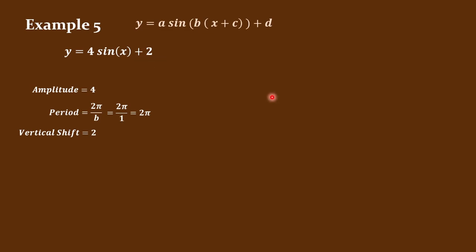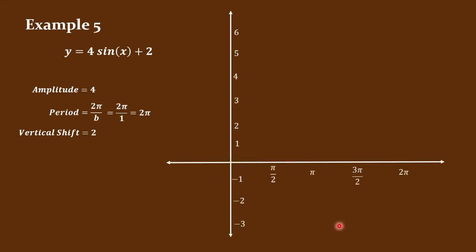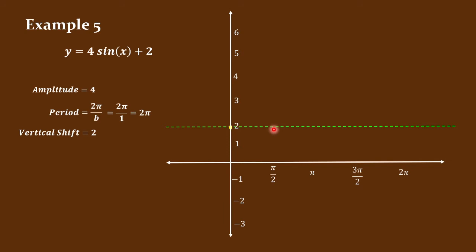The vertical shift tells us the midline will be shifted to positive 2. Compared to the parent graph sine x, the midline is at the x-axis, but now we set it at positive 2. We start at the intersection of the midline and the y-axis. Since the coefficient is positive and the amplitude is 4, for pi over 2 the point must be above the midline at 6. Then we return to the midline, go 4 units below to negative 2, and return to the midline. This is the graph of y = 4 sine x + 2.